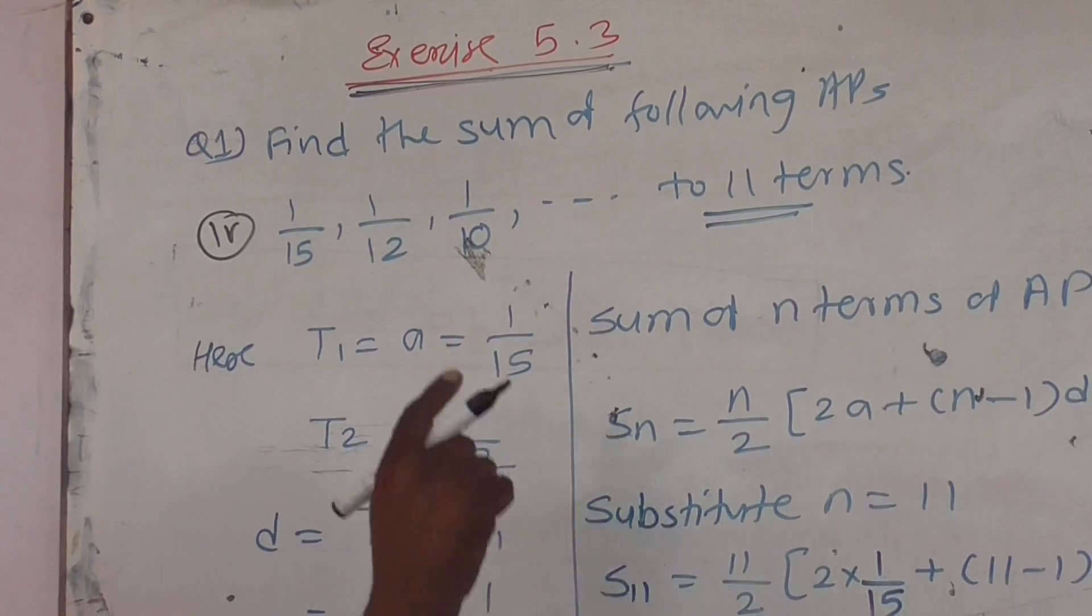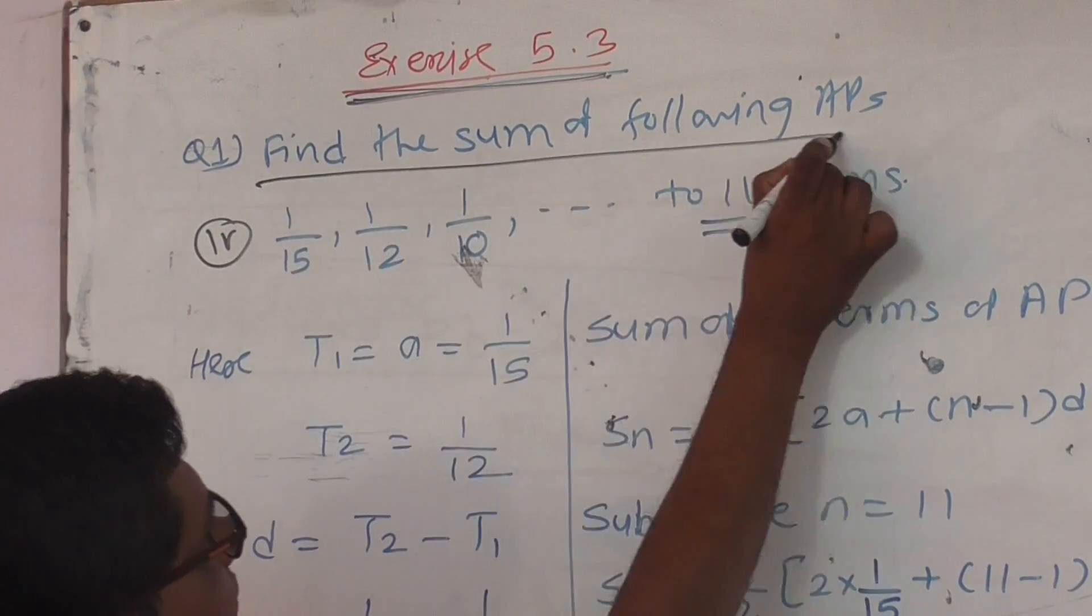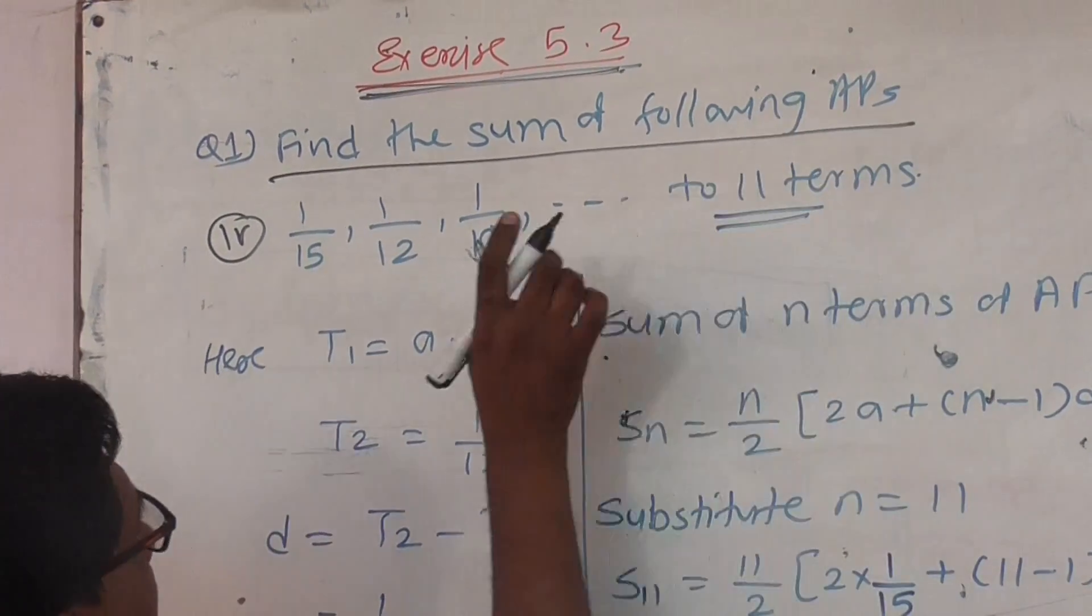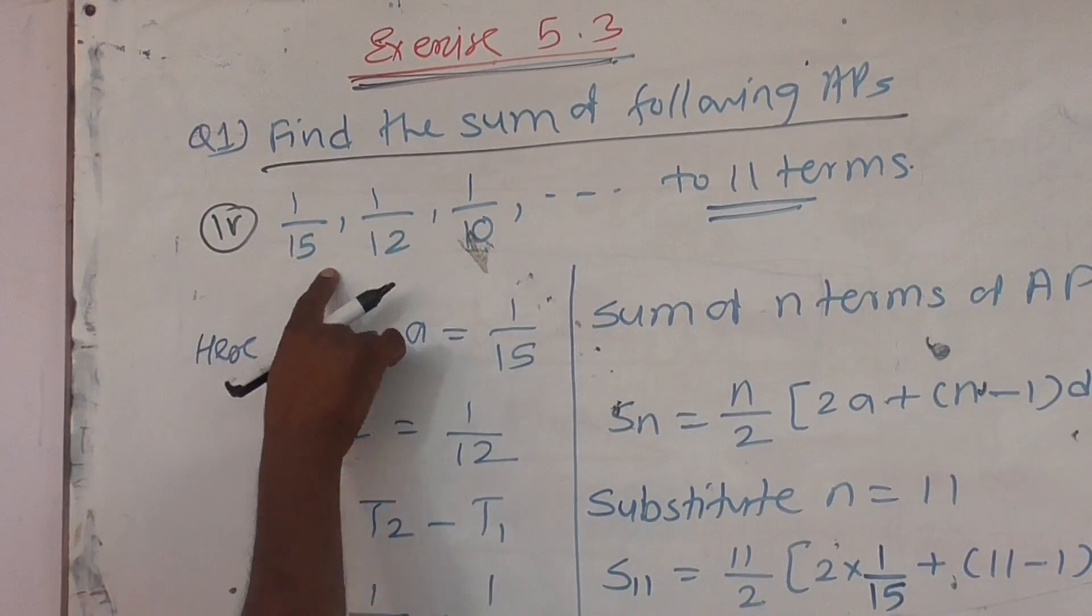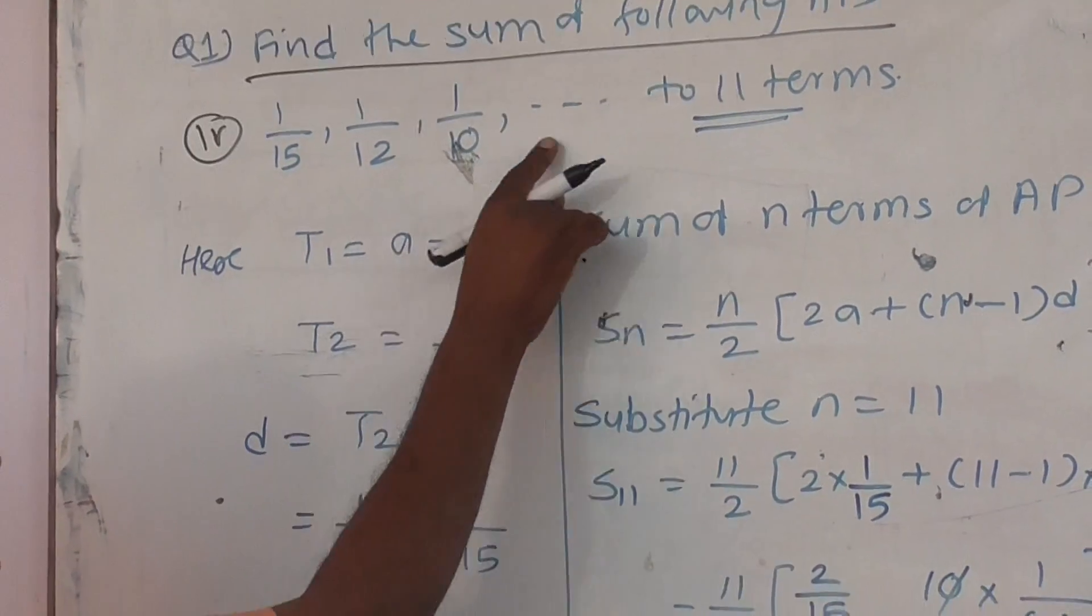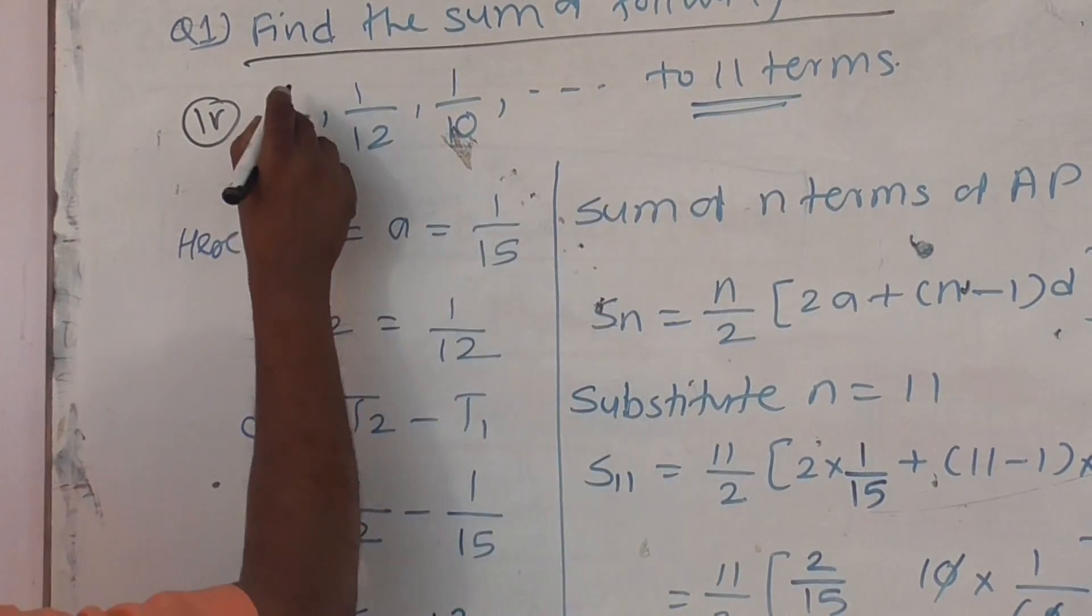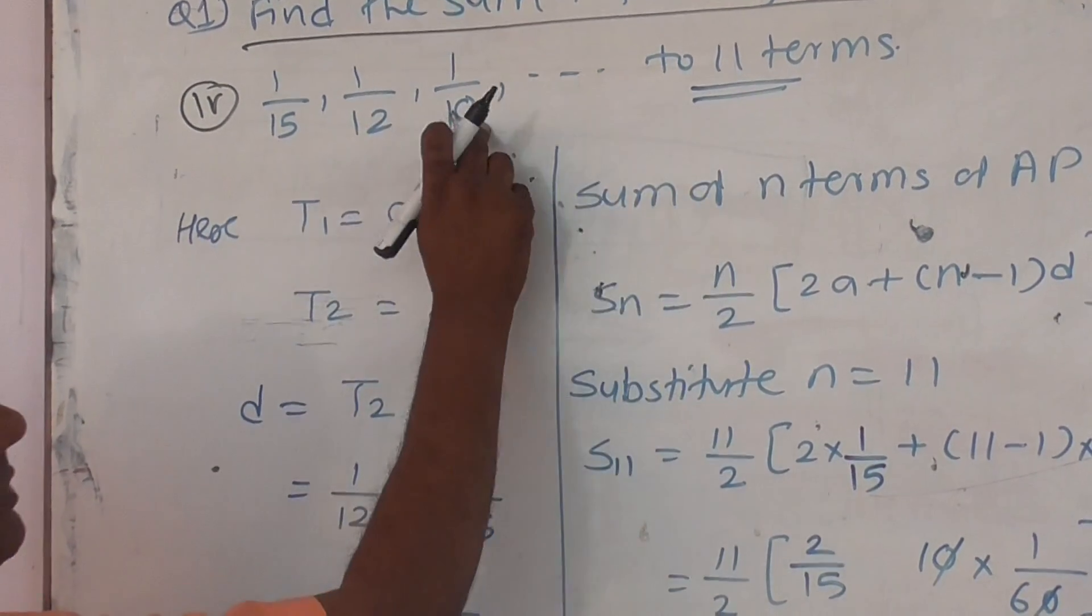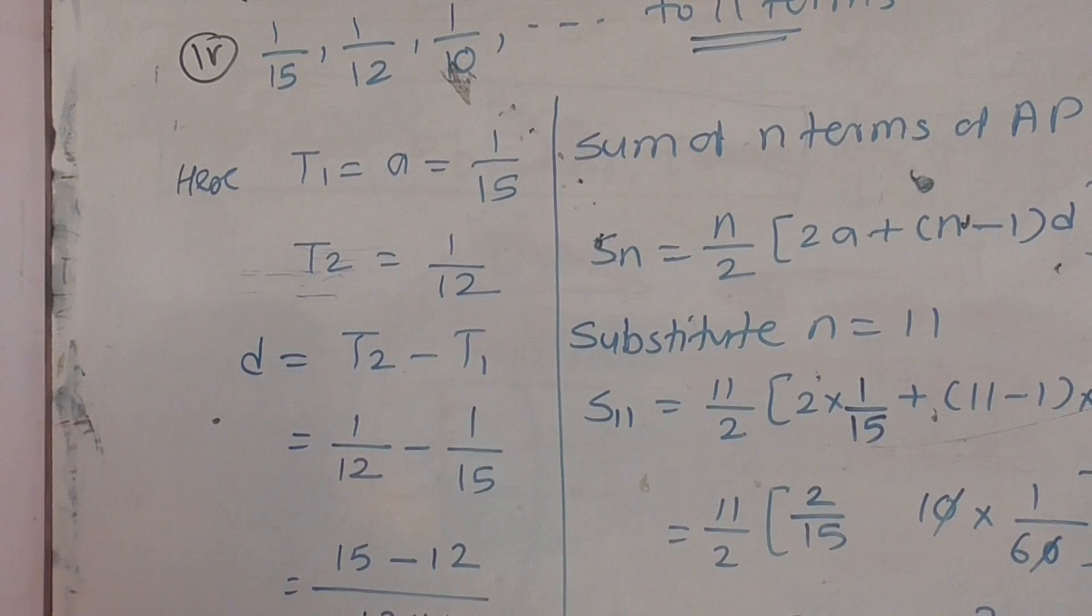Find the sum of following arithmetic progressions: 1 by 15, 1 by 12, 1 by 10, up to 11 terms.